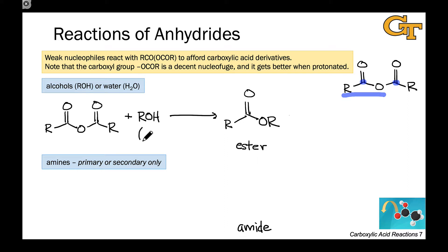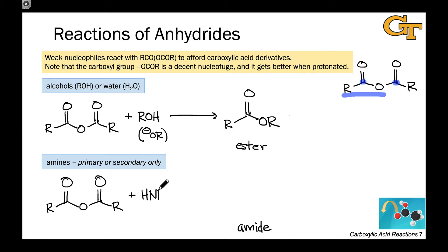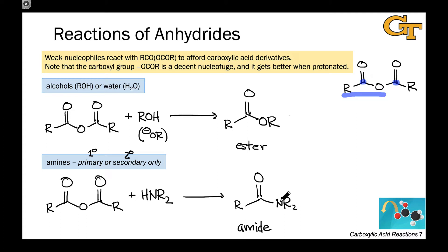This can be done with the neutral alcohol or with an alkoxide if stronger or faster conditions are desired. Treatment of an anhydride with a primary or secondary amine gives an amide. Keep in mind that we need the amine to be primary or secondary so that we can deprotonate the nitrogen at some point in the mechanism to give a neutral amide. Here again, we see carboxylate acting as a leaving group, with the nucleophilic nitrogen replacing the carboxylate fragment. The byproduct of both of these reactions is the carboxylate or carboxylic acid corresponding to the remainder of the anhydride.